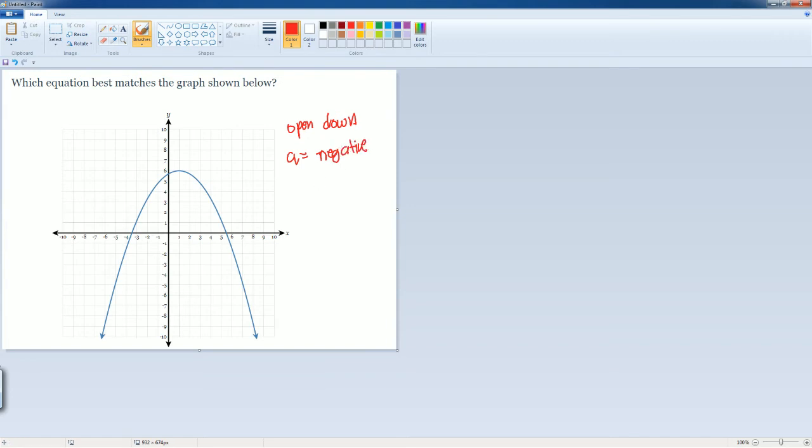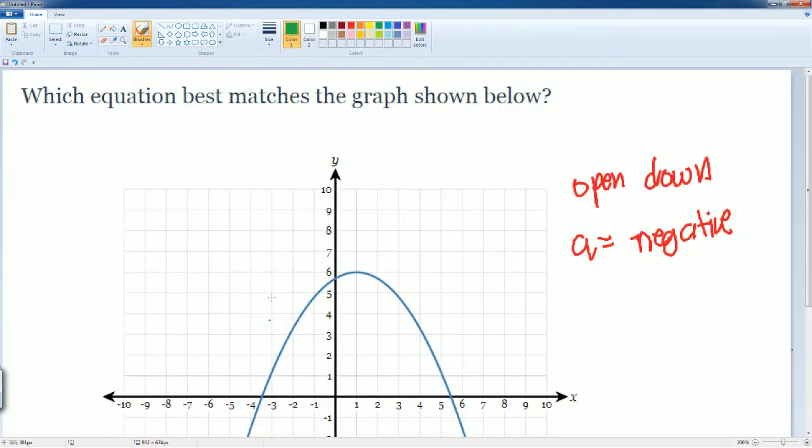Then let's take a look at the vertex. So the vertex - we went to the right first. We went to the right one time. Then we went up one, two, all the way up here six times. So here it would be one comma six.